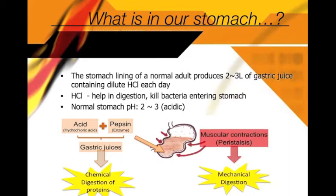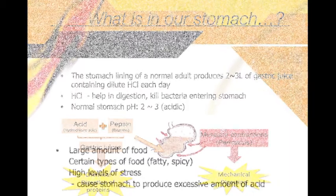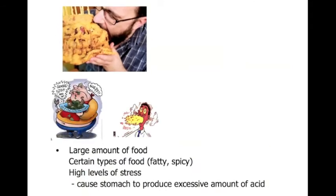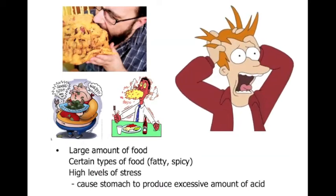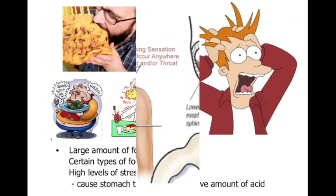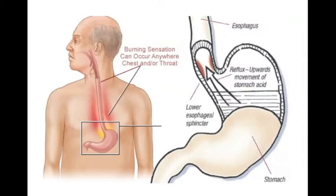Normally the acid level in our stomach is about two or three. However, overeating, eating certain types of food, especially fatty and spicy food, or high levels of stress may cause the stomach to respond with an outpouring of acid, lowering the stomach pH. Then the acid will be forced up out of the stomach into unprotected esophagus and will react with tissues and cause a burning sensation commonly known as heartburn.